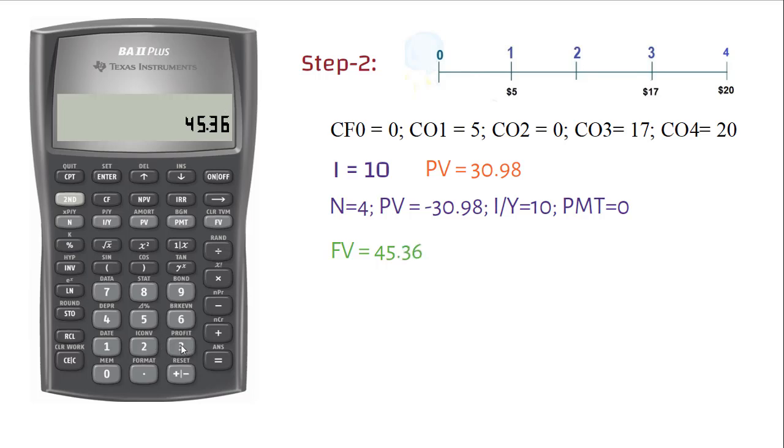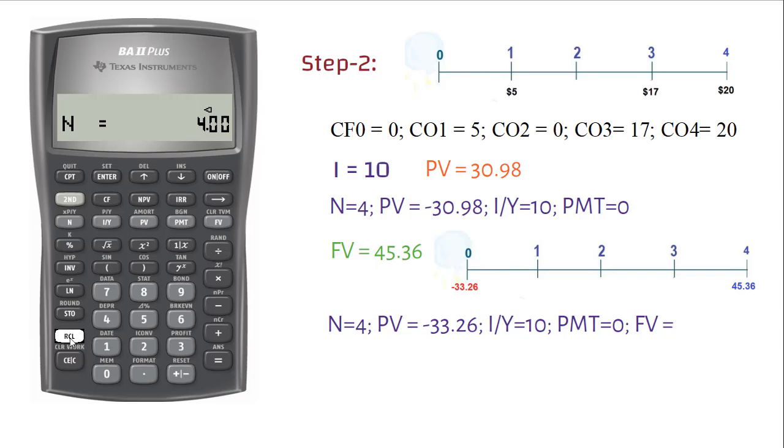The timeline will look like this now. Enter N equals 4. Press RCL and 1 and then press PV. Set PMT equals 0. Press RCL and 3 and then press FV.